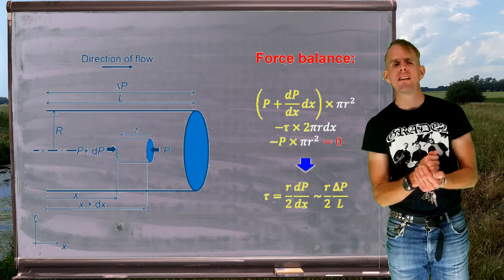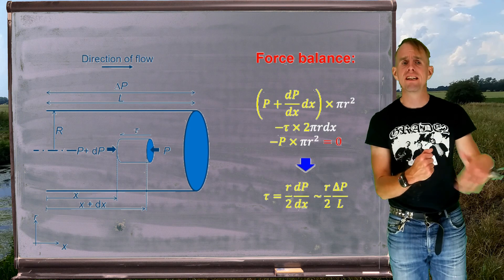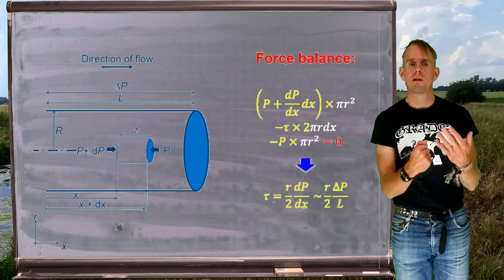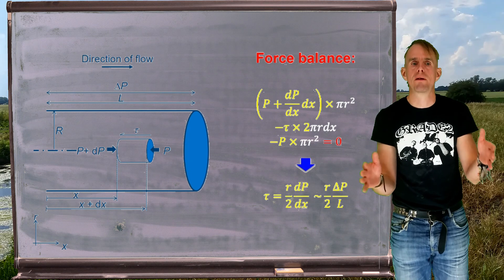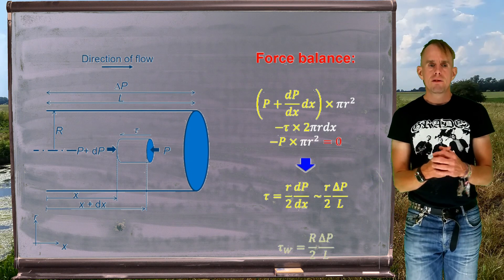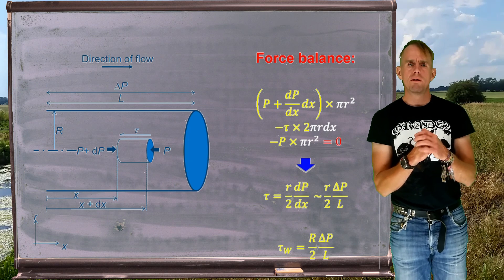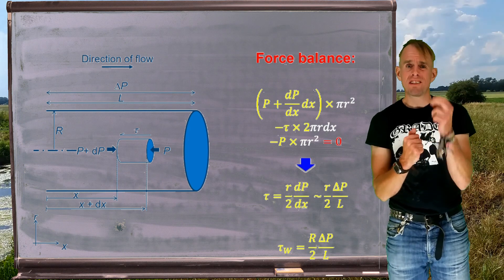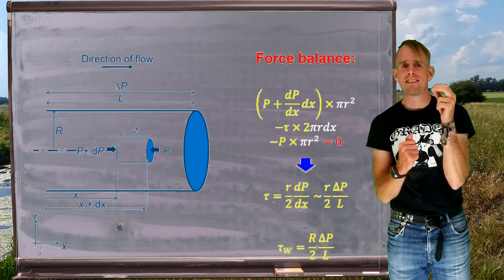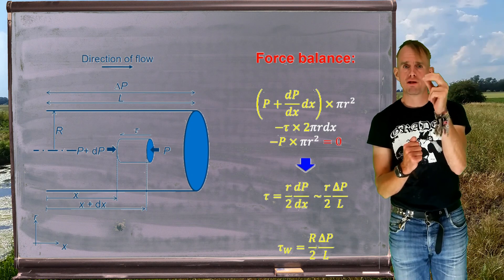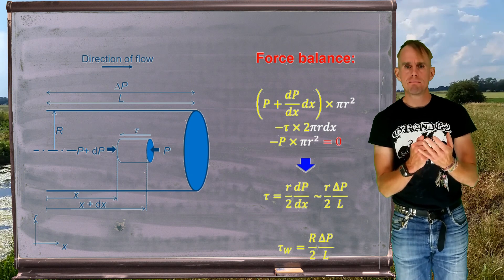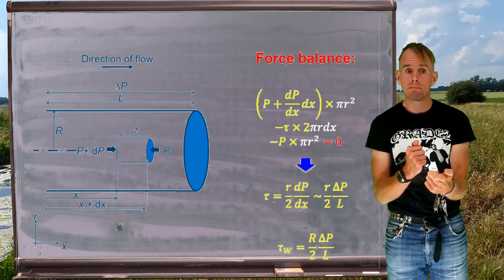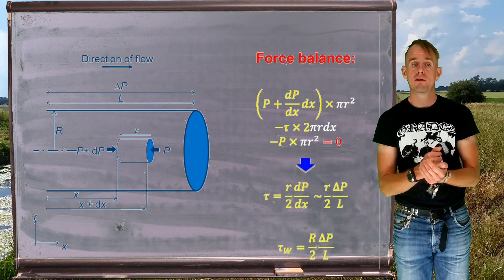As engineers we might note that dp/dx is approximately the pressure drop divided by the length, so τ = r/2 · Δp/L, where Δp is the pressure drop across the pipe. In rheology, we want to set a datum — a reference point in the flow to refer shear stress back to. In capillary rheometry, we use the pipe wall as that datum. So τ_w, the shear stress at the wall, equals R/2 · Δp/L, where R is the pipe radius.